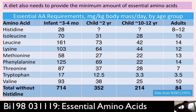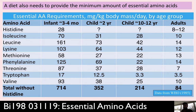These numbers are quite high in infants. The unit is milligrams per kilogram of body mass per day, by age group. This is all World Health Organization data from numbers established back in the 1980s. Infants have a very high requirement for many of these essential amino acids because they are building protein rapidly. Not all amino acids have the same requirements.